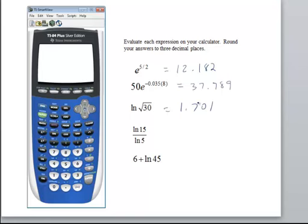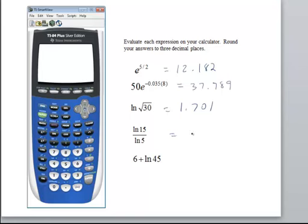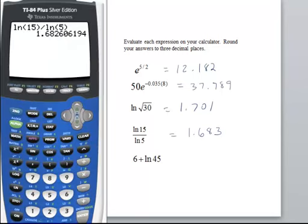Natural log of 15 divided by the natural log of 5. It would be easier for us if I could take 15 by 5 and just find the natural log of 3, but those are not equivalent expressions. So, I need to take the natural log of 15. Make sure you close parentheses on this one or you will get the wrong answer. And I have to divide that by the natural log of 5. And I come up with 1.6826. Again, going out four places and rounding back, I will use 1.683.